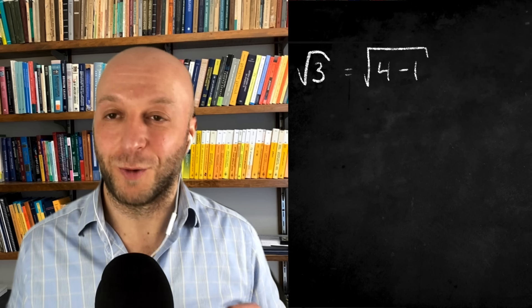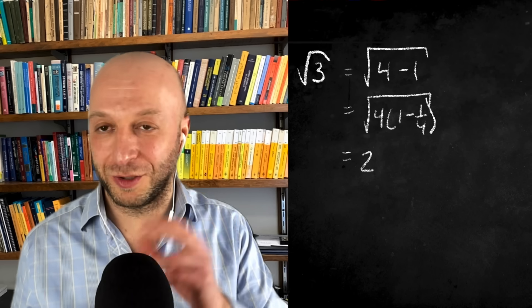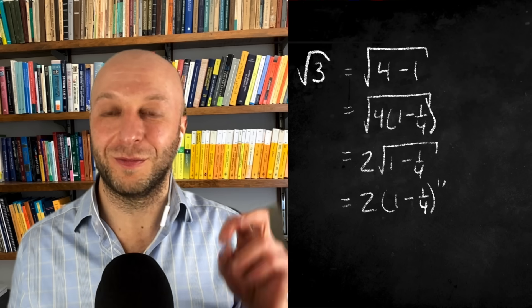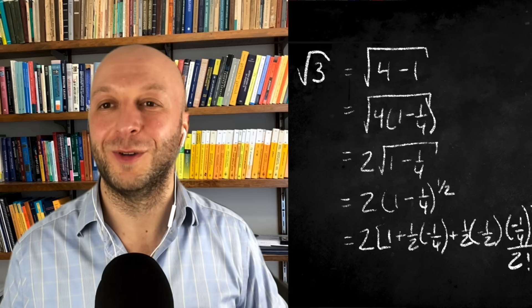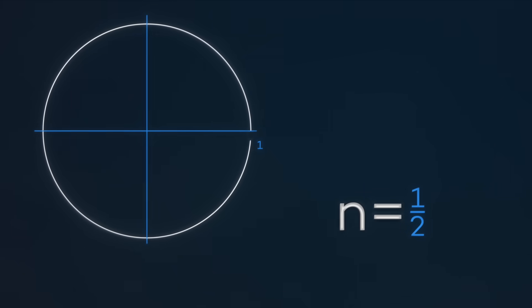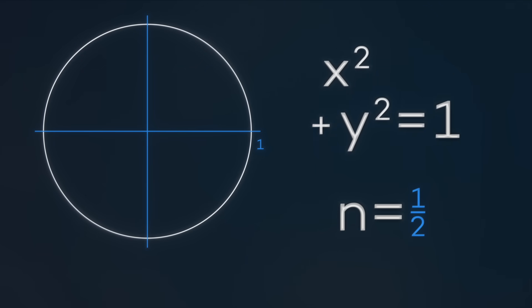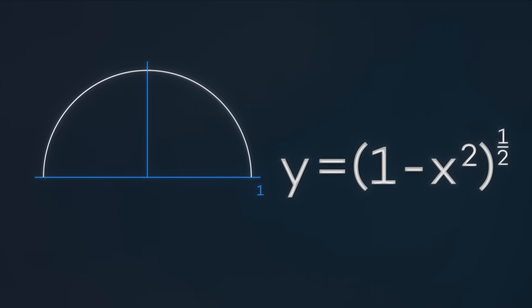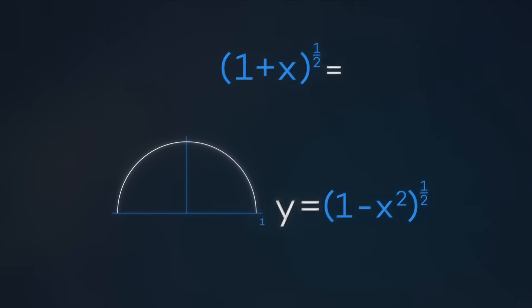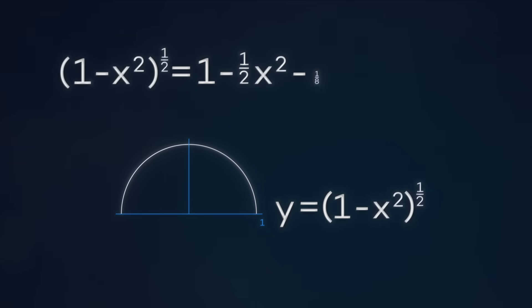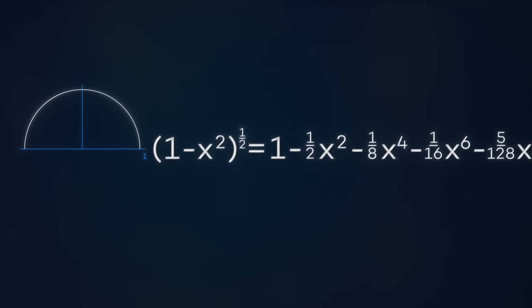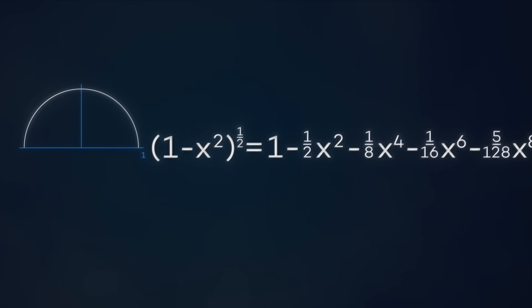With n = 1/2, Newton could work out square roots very quickly. For example, √3: write 3 as 4−1, pull out a 4, getting √4 × √(1−1/4) = 2√(1−1/4). Substituting x = −1/4 into the series gives a rapidly converging expansion for √3 to high accuracy. Newton is particularly interested in n = 1/2 because the equation for a unit circle is x² + y² = 1. Solving for y, the top half of the circle equals (1−x²)^(1/2) — the same expression, replacing x with −x², which adjusts signs and doubles the power of x on each term.